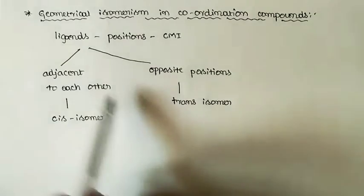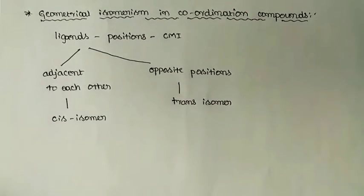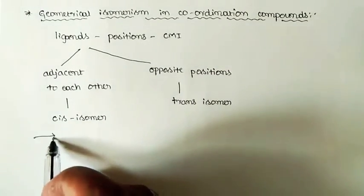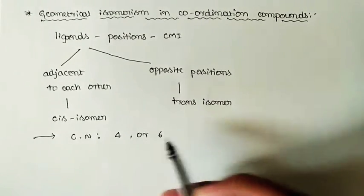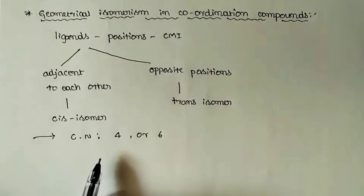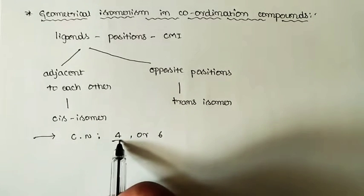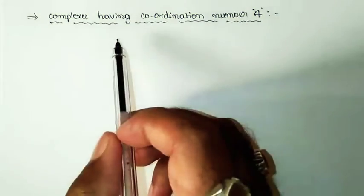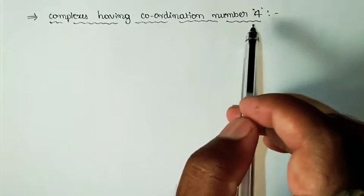We can collectively call geometrical isomerism as cis-trans isomerism. Geometrical isomerism is most common in coordination compounds with coordination numbers equal to 4 or 6. Now we shall look at geometrical isomerism in complexes with coordination number 4 as well as coordination number 6.